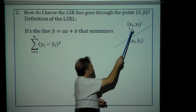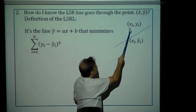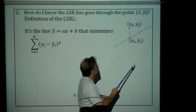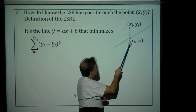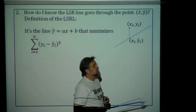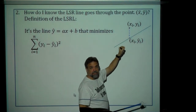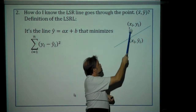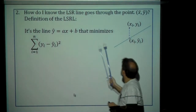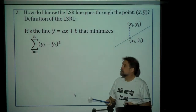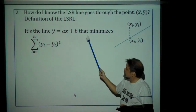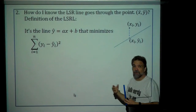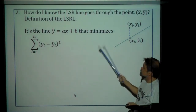Let's remember what residuals are. Here's our actual observed point: x-sub-i, y-sub-i. And the point directly below or above it on the least squared regression line is the point x-sub-i, y-hat-i. So basically, y-hat is the predicted value of y, whereas y-sub-i is the actual observed value of y. Observed minus predicted — that's what your residual is. That distance is the residual; it's like the error, how much we missed by. I want the line where the sum of the squared residuals is as small as possible.